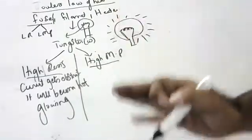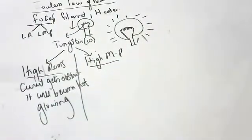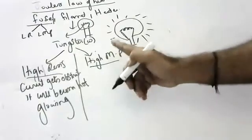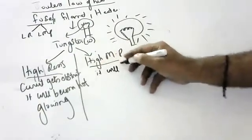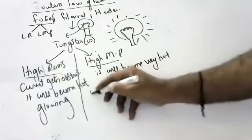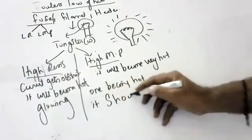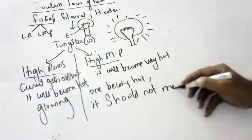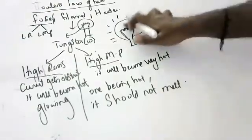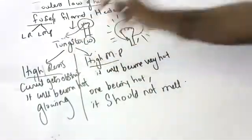Every particle on earth glows on becoming hot, but tungsten glows very well, that's why it's used. Why high melting point? Because the filament becomes very hot — if it melts, the circuit breaks and the bulb stops working. So we need an element with high resistance and high melting point. That element is tungsten.